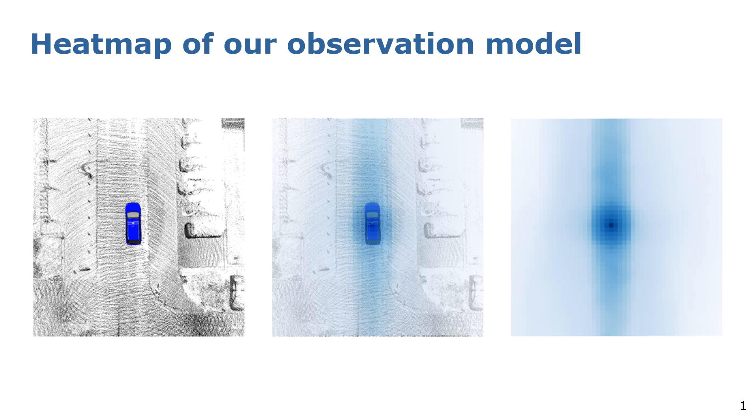Typically for Monte Carlo localization, a large number of particles should be used to make sure that the real pose is included, especially when the environment is large. However, a large amount of particles will dramatically increase the computational time. When applying our overlap-based observation model, particles could still obtain relatively high weights as long as they are close to the real pose, even if they are not in the exactly same position. This allows us to use fewer particles to achieve a high success rate of global localization.